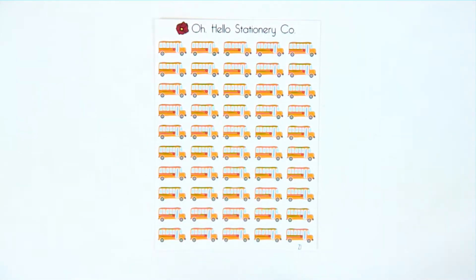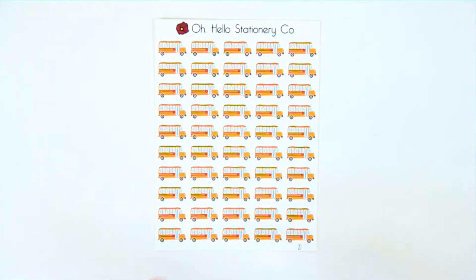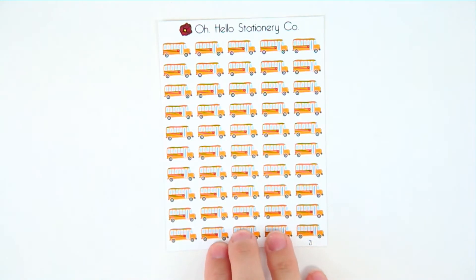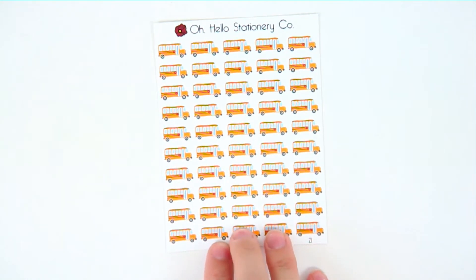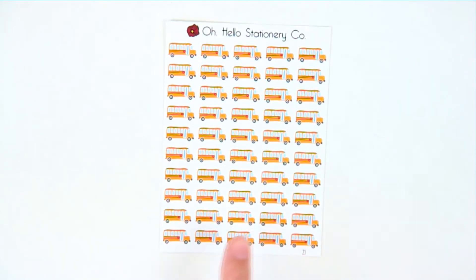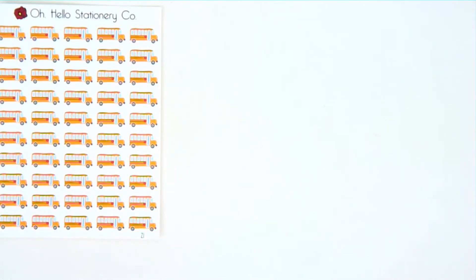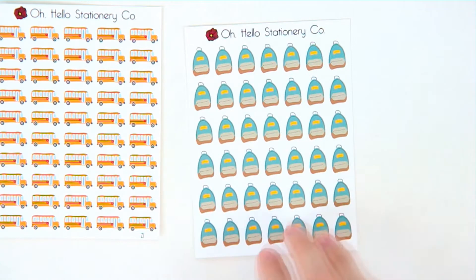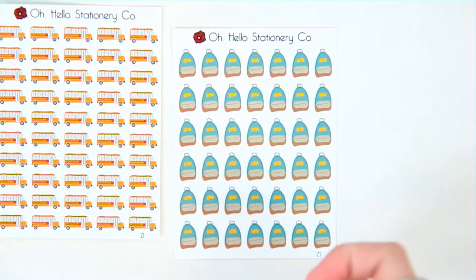First up is this sheet of a bunch of little school buses. You can track when your kids are riding the bus or going on field trips. These are really universal — you can use them for a lot of different things — so I wanted to make sure you got a whole sheet of just the school buses.